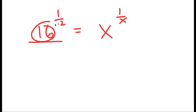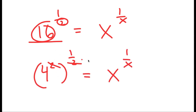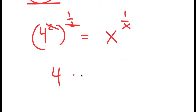This means that 16 and 2 have to turn into the same number, so we need to rearrange this so that 16 and 2 are the same number. 16 is the same thing as 4 squared, so I'm going to rewrite it as 4 squared. So I have 4 squared to the power of 1 half is equal to x to the power of 1 over x. Remember, these two multiply — 2 times 1 half is just 1. So I'm left with 4 is equal to x to the power of 1 over x.